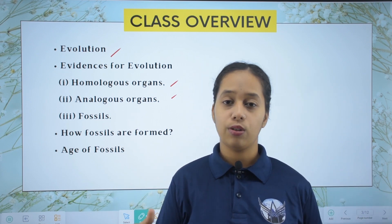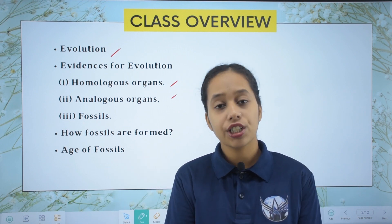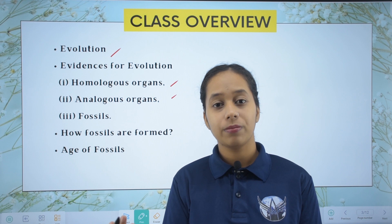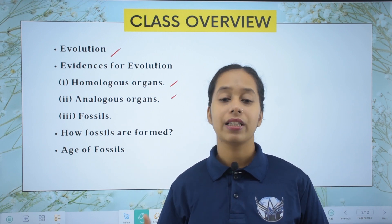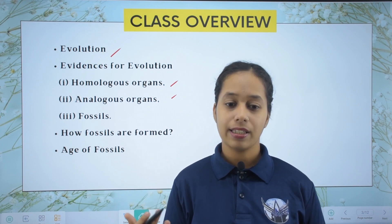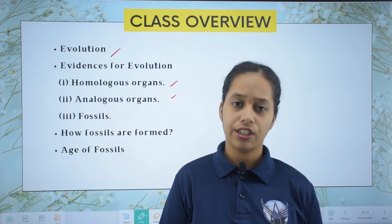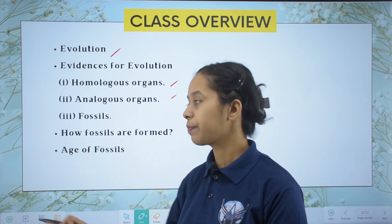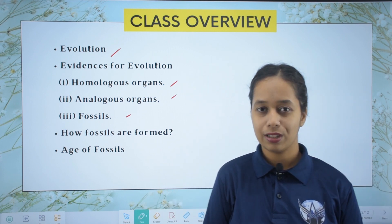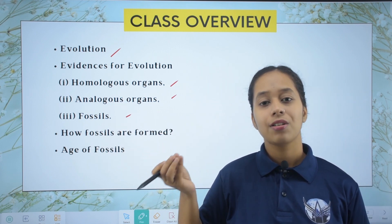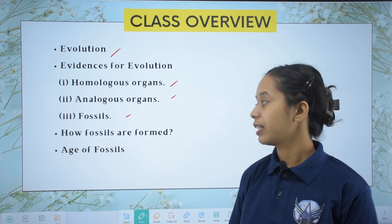Analogous organs arise because, due to survival or other factors, organisms underwent similar changes and similar organs were created. For example, wings serve the same purpose. Fossils are also an evidence for evolution — for example, dinosaur fossils. We will discuss the details further.